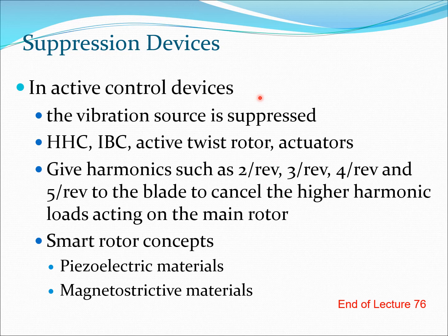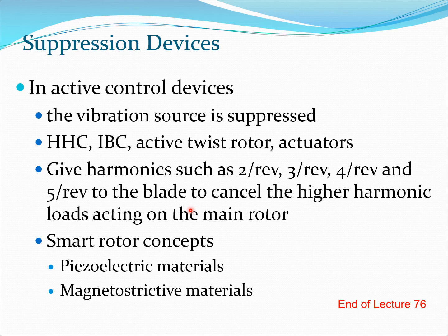In contrast, active control devices suppress the vibration source directly. For example, if a four-per-rev vibration in the fixed system originates from two, three, four, and five per rev in the rotating system at the blade, you want to excite the rotating system or the blade at certain frequencies to cancel the higher harmonic loads acting on the main rotor. Methods include higher harmonic control, individual blade control, and the active twist rotor concept. These concepts use actuators to deflect the blade in a suitable manner so that the acting harmonics are cancelled before being transmitted to the fuselage.